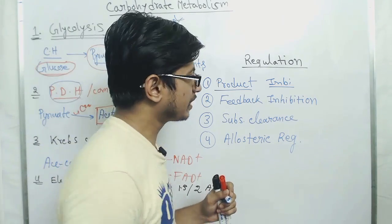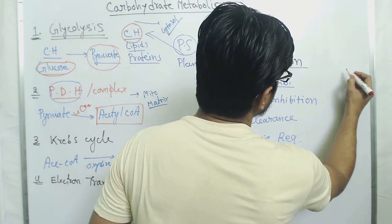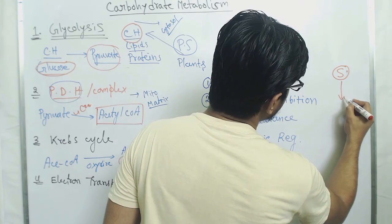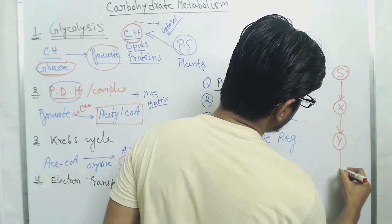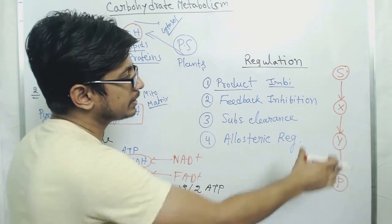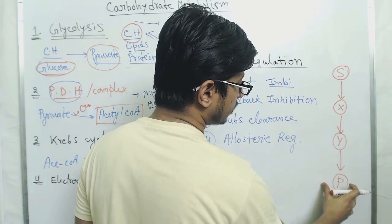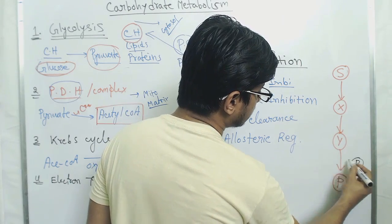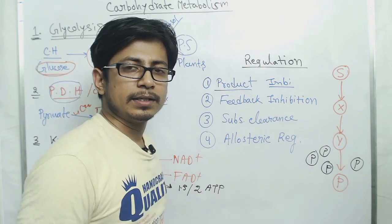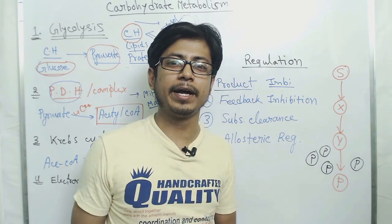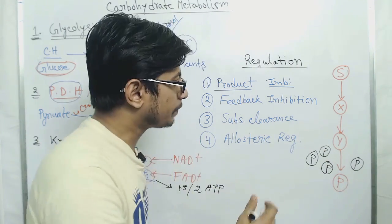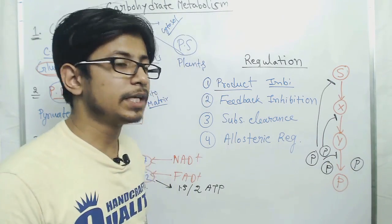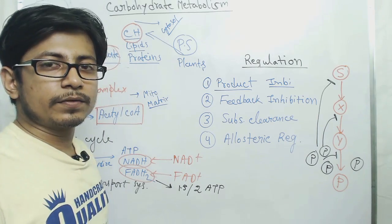Product inhibition is a situation — let me draw a hypothetical pathway. We start with substrate S, which is converted to intermediate X, then X is converted to Y, and finally Y is converted to the product P. In this pathway, if the product P is already present in the environment, logically it's not worth doing the whole process. So presence of product is going to inhibit the stages of conversion — that is known as product inhibition.